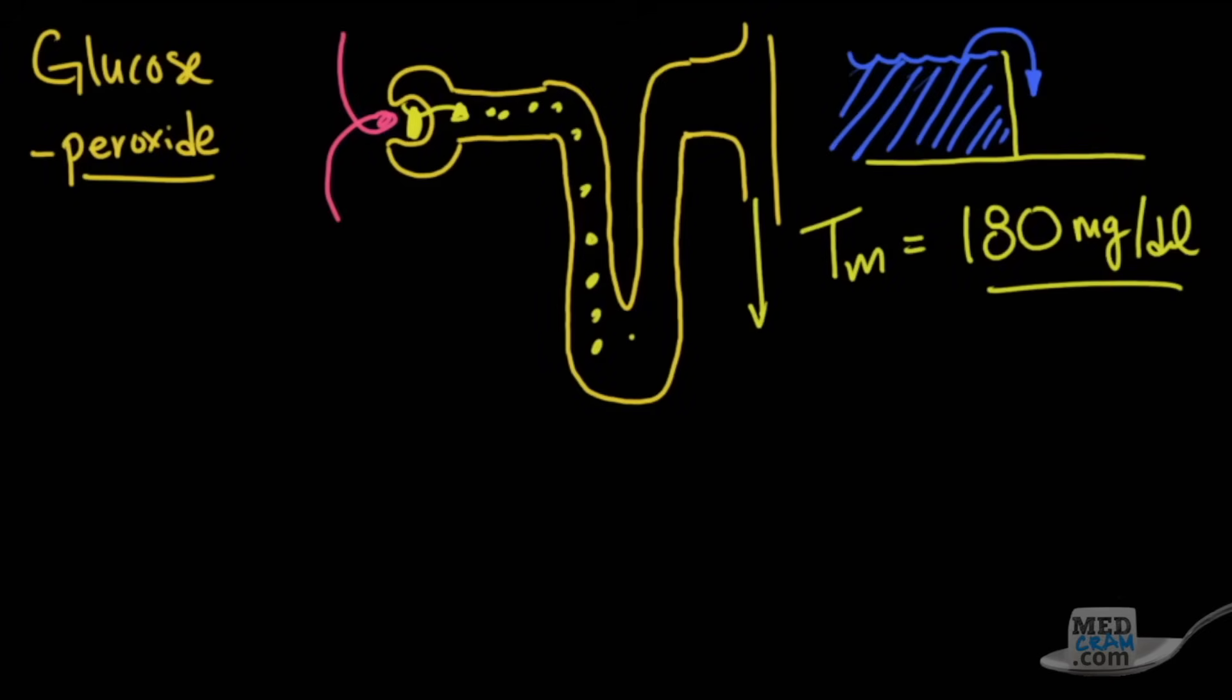You should know that there are SGLT2 inhibitors, and these are the medications for diabetes that end in flozin, like empagliflozin and dipagliflozin. These are medications that actually work by dumping glucose into the urine, and so it can cause glycosuria even though there is a normal or elevated blood glucose, but not above the 180 that we talked about. A positive urine glucose on these agents does not necessarily indicate hyperglycemia.